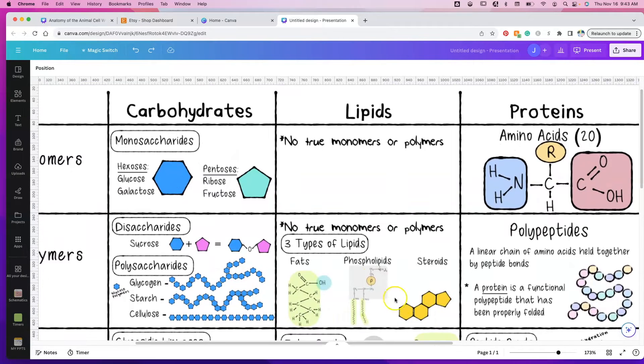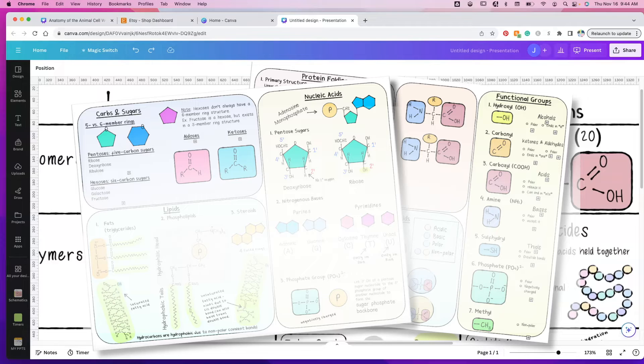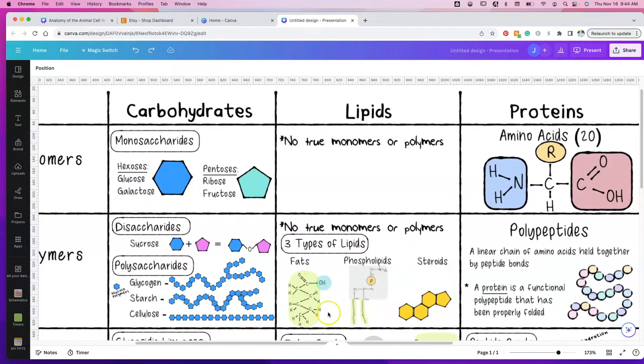Now lipids is an interesting one because lipids are not true monomers or polymers. So they don't have building blocks. And even with the polymers that I have here, they're really not polymers because you can't have polymers if you don't have monomers. But I put in the three types of lipids down here.